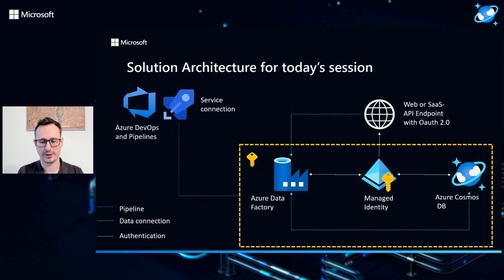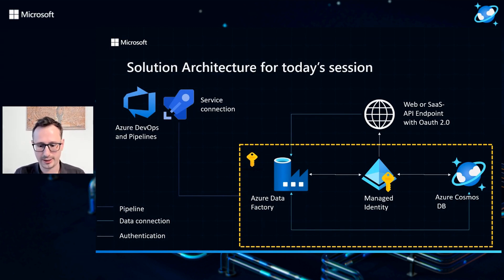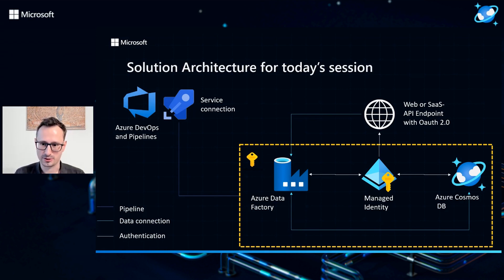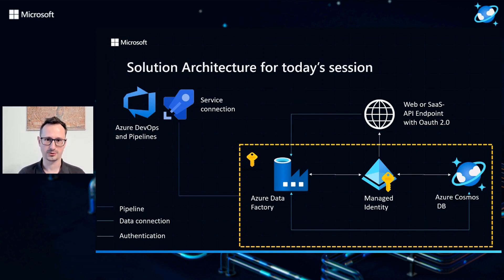Let's start with a diagram. Imagine you have this kind of architecture in place, consisting of Azure DevOps and pipelines, a service connection of your choice, a subscription that features an Azure Data Factory, a single managed identity, and of course, Azure Cosmos DB used as a data store, and a web or API endpoint that you use to retrieve data from.